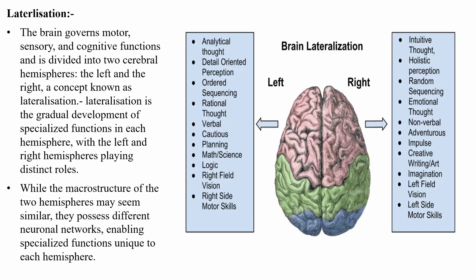Moving on to lateralization: the brain governs our motor, sensory, and cognitive functions and is divided into two cerebral hemispheres — left and right — and this is called lateralization. Lateralization is the gradual development of specialized functions in each hemisphere, with the left and right hemispheres playing distinct roles. The microstructure of the two hemispheres can look similar, but they have different neural networks enabling specialized functions. The left hemisphere is responsible for analytical thought, detail-oriented perception, ordered sequencing, rational thought, verbal and social functions, planning, math and science, logic, right field vision, and right side motor skills.